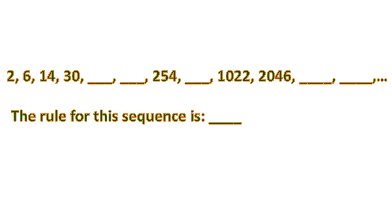Let's try two operations: 2 plus 1 is 3, times 2 is 6 — that's true. Then 6 plus 1 is 7, times 2 is 14 — also true. Confirming with the next pair: 14 plus 1 is 15, times 2 is 30 — all right, it's true for three pairs. So the rule is plus 1, then times 2.